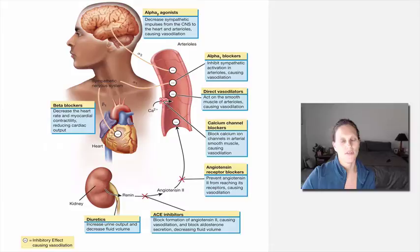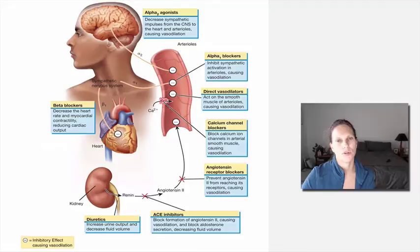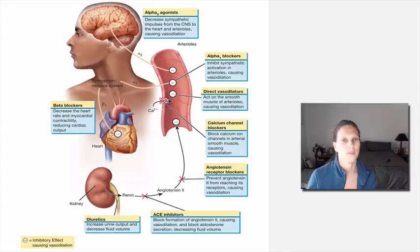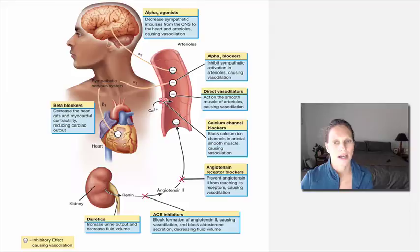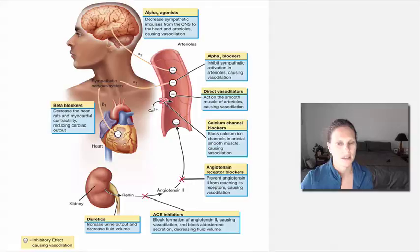The alpha-2 agonists are central nervous system drugs. When the alpha-2 receptor — a presynaptic receptor — is stimulated, it causes a decrease in sympathetic impulses leaving the central nervous system, effectively blocking sympathetic stimulation peripherally. Alpha-1 blockers block sympathetic activation of the arterioles causing vasodilation. Direct vasodilators do the same thing but act directly on smooth muscle of the arterioles, leaving the sympathetic nervous system out. Calcium channel blockers block calcium ion channels in arterial smooth muscle, causing vasodilation.